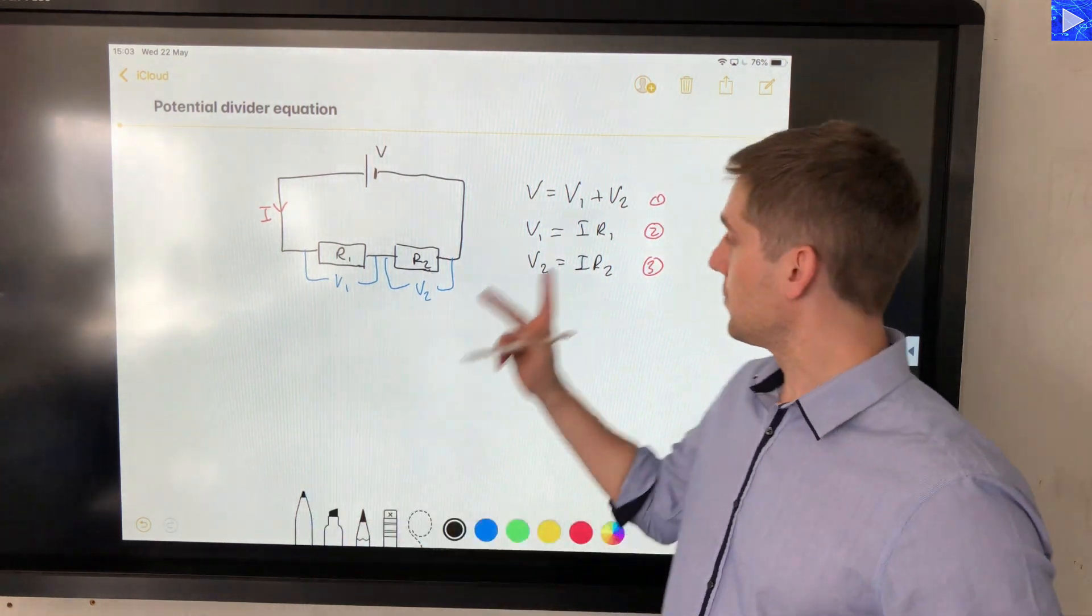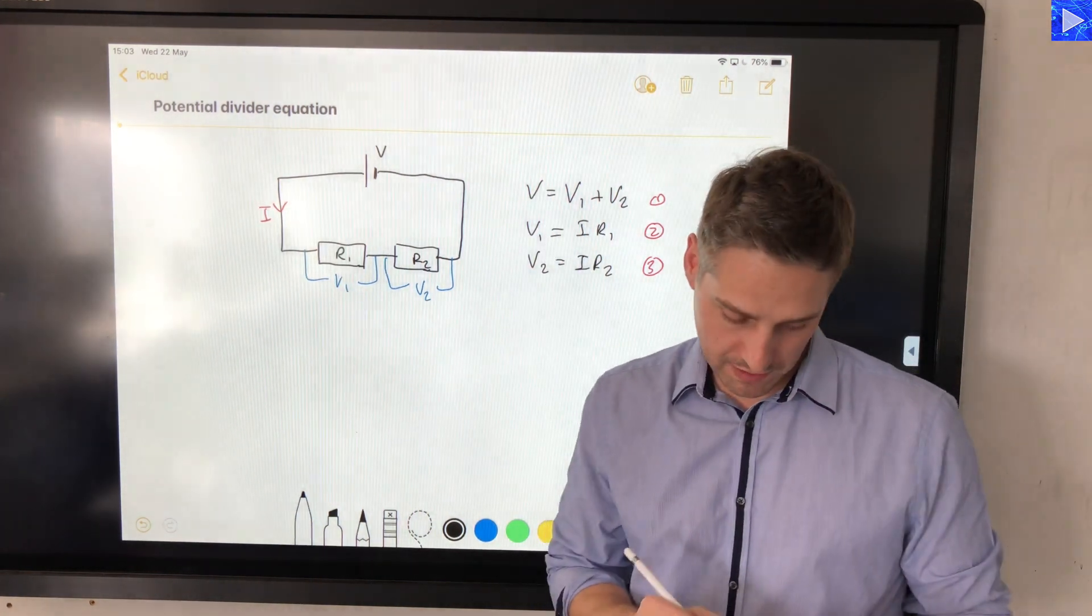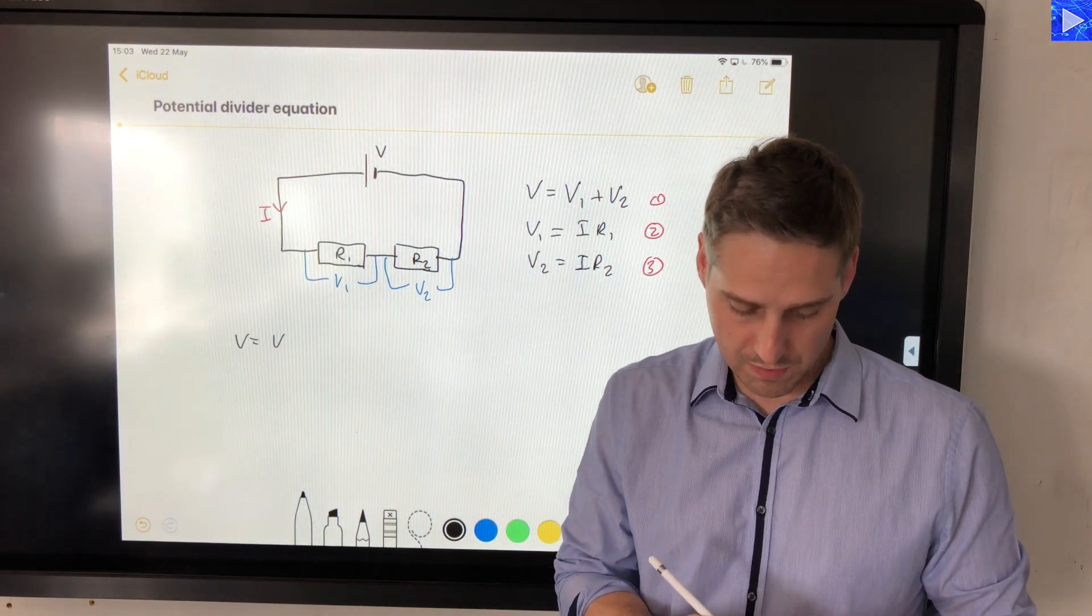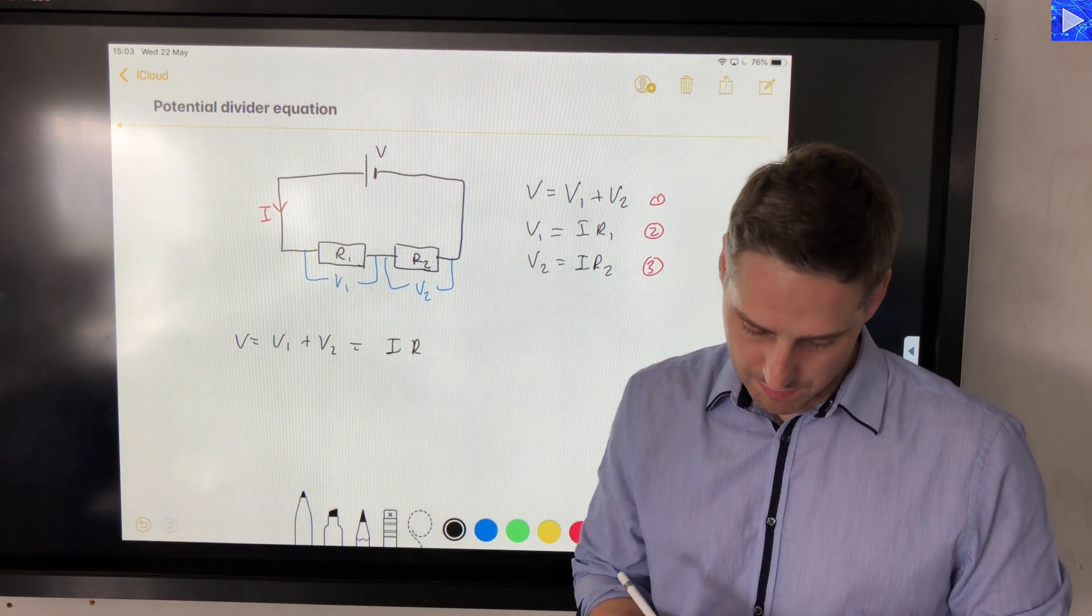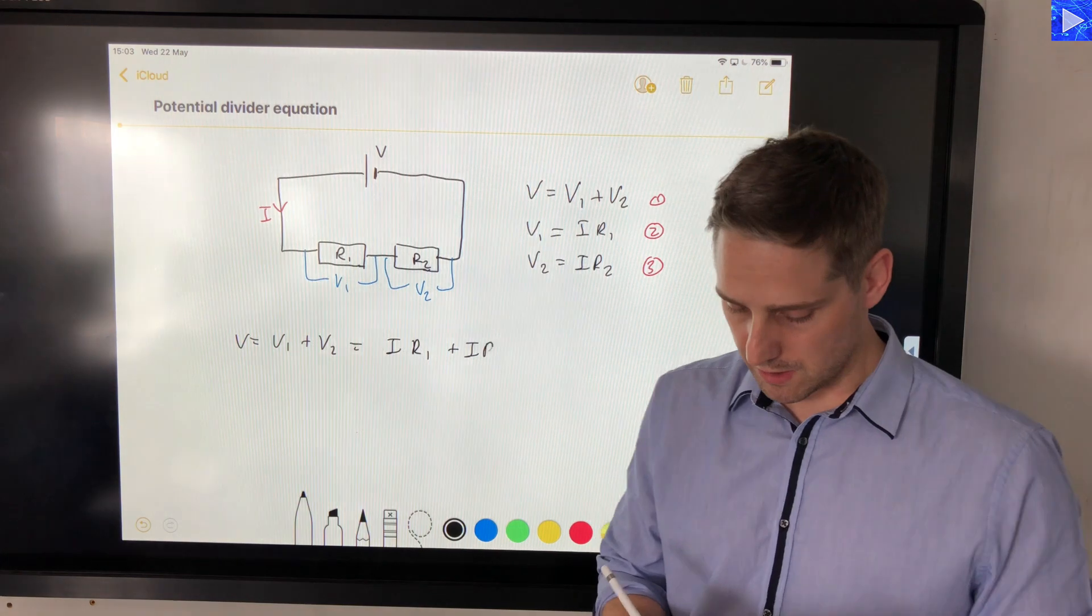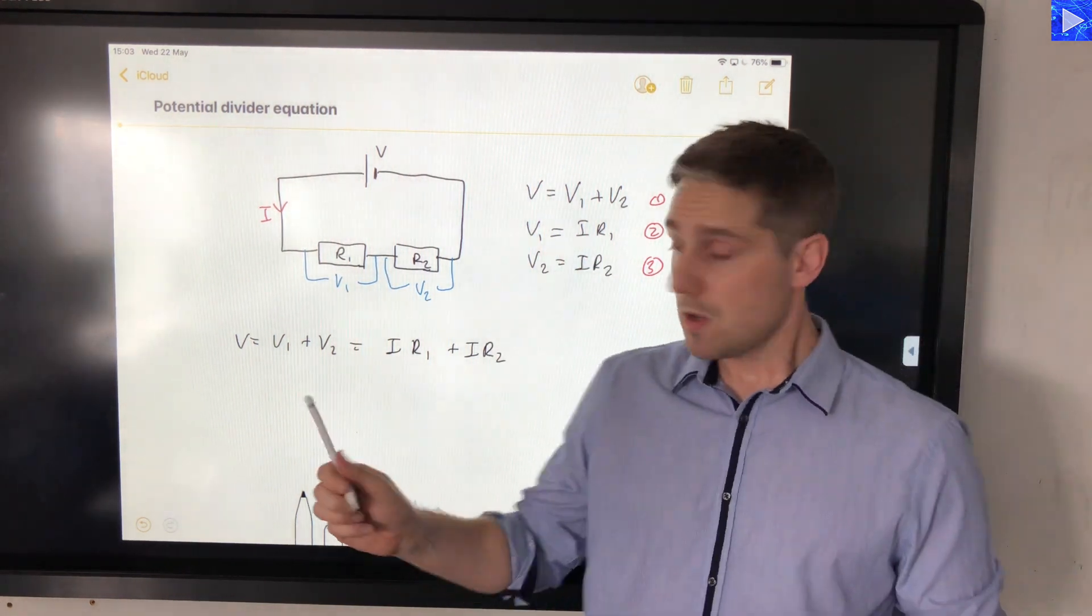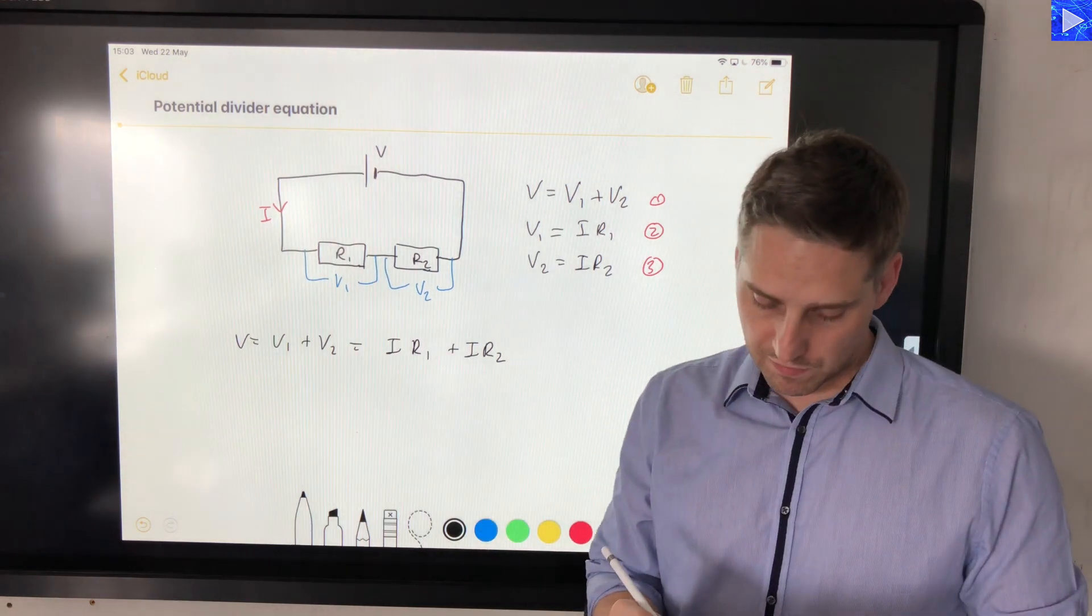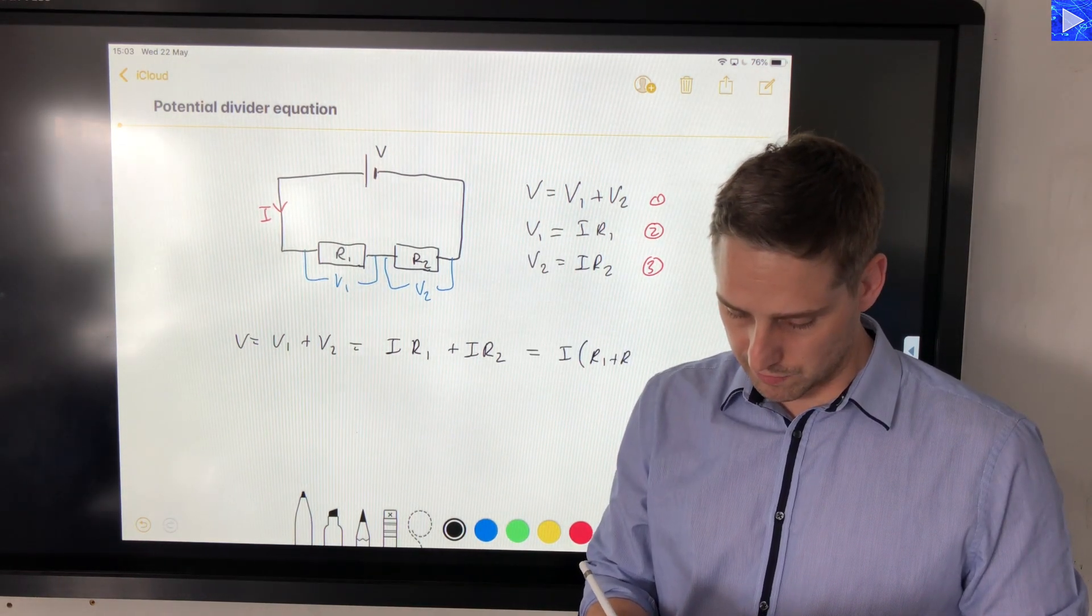What we're going to do first is take this equation as a base and substitute for V1 and V2 into it. So V equals V1 plus V2, which is equal to I R1 plus I R2. So I made those two substitutions there into V1 and V2. We've got a common I term there, so we can group those. We've got I times R1 plus R2.